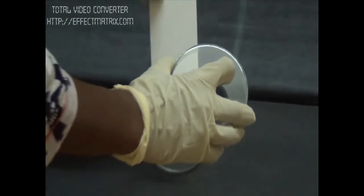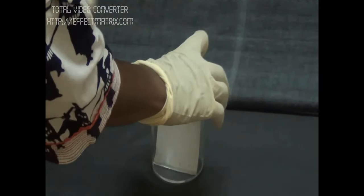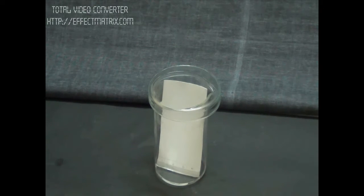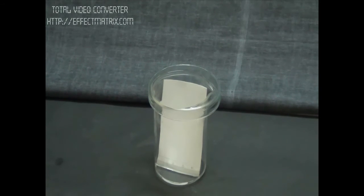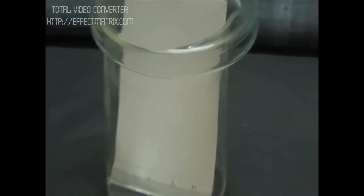This solvent system contains butanol, acetic acid, and water in the ratio of 8 to 2 to 2. On the basis of affinity towards water, butanol, and acetic acid, amino acids will separate. Acetic acid also functions to provide humidity in the chamber.